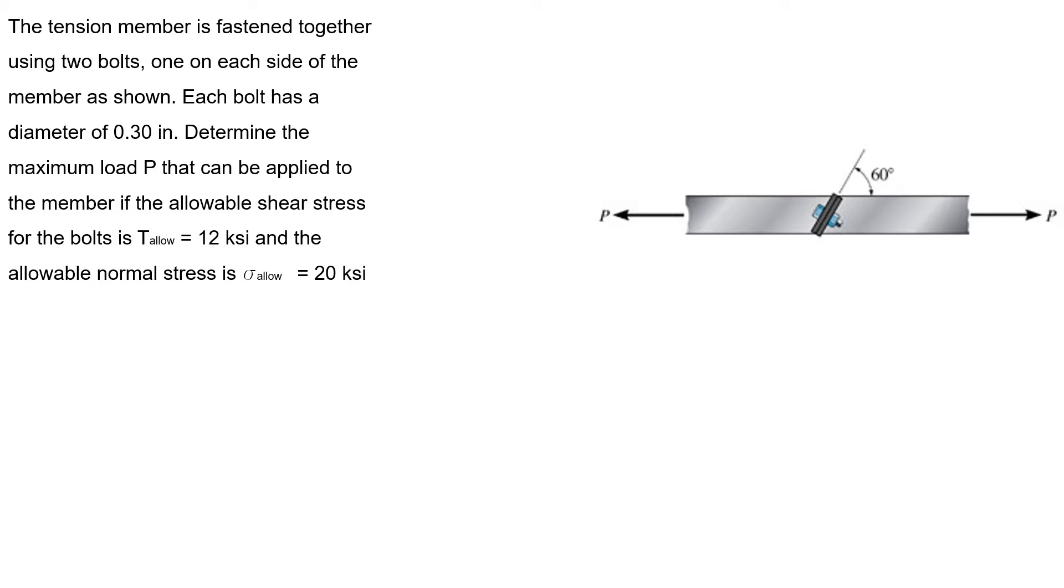Each bolt has a diameter of 0.30 inches. Determine the maximum load P that can be applied to the member if the allowable shear stress for the bolt is τ_allow = 12 KSI and the allowable normal stress is σ_allow = 20 KSI.